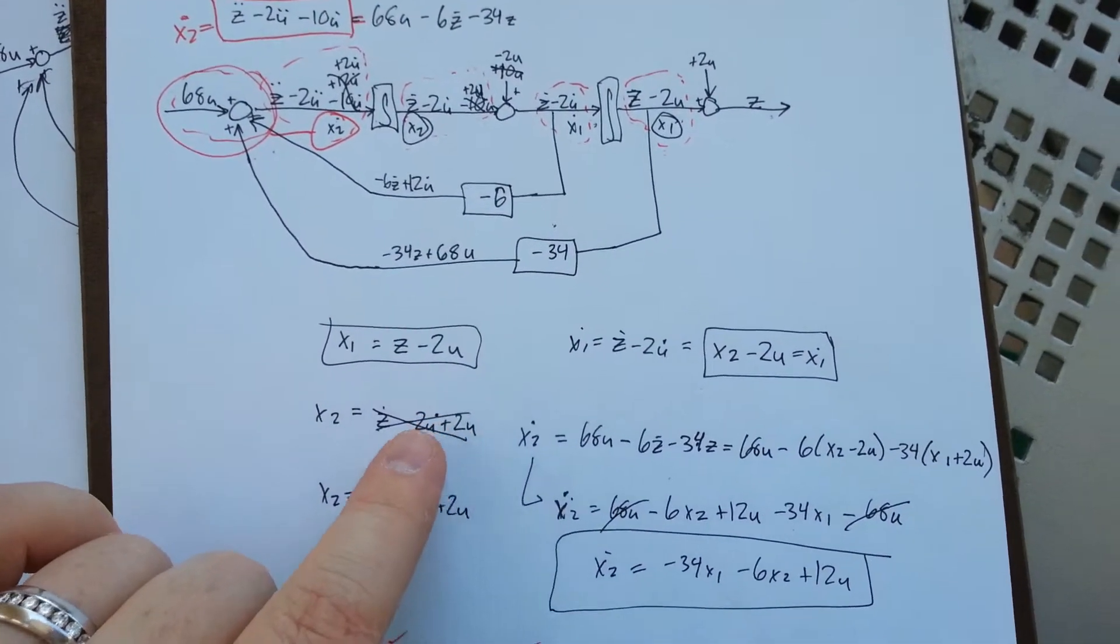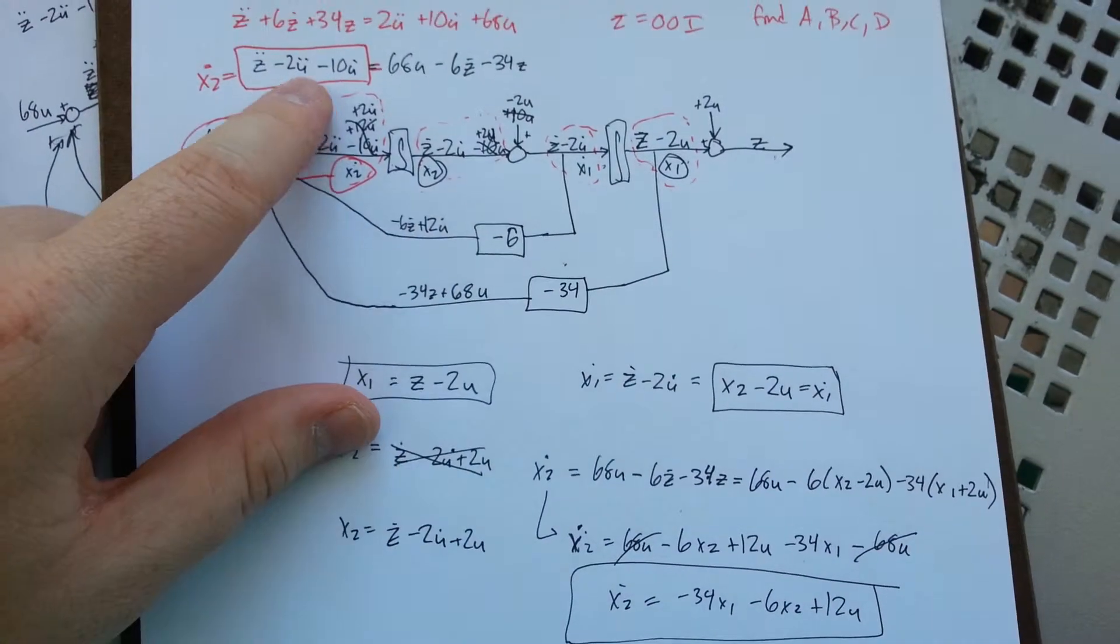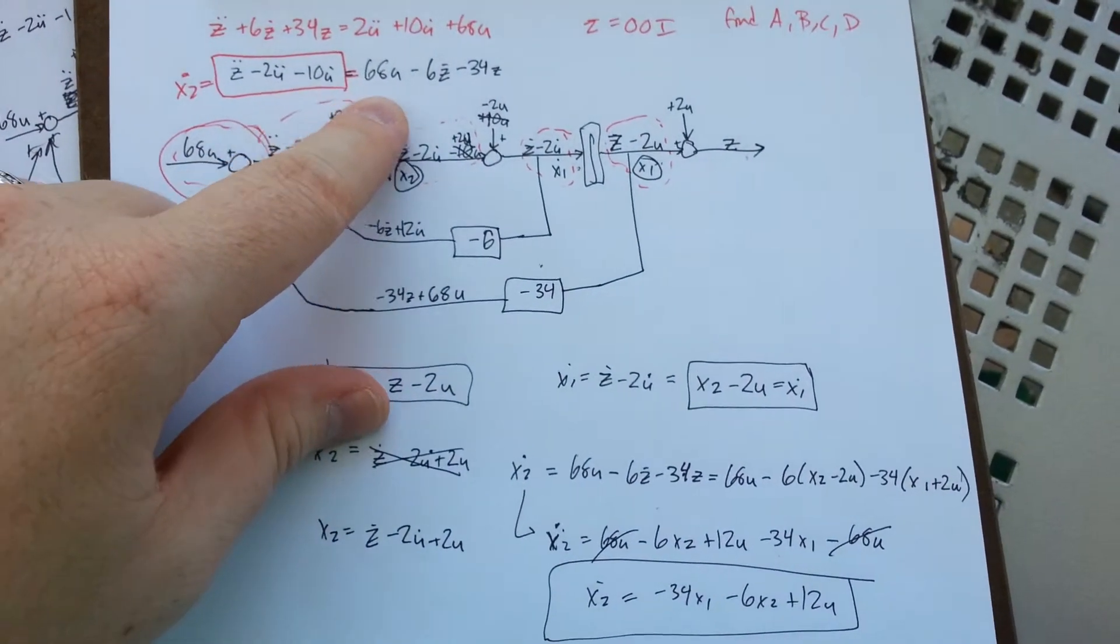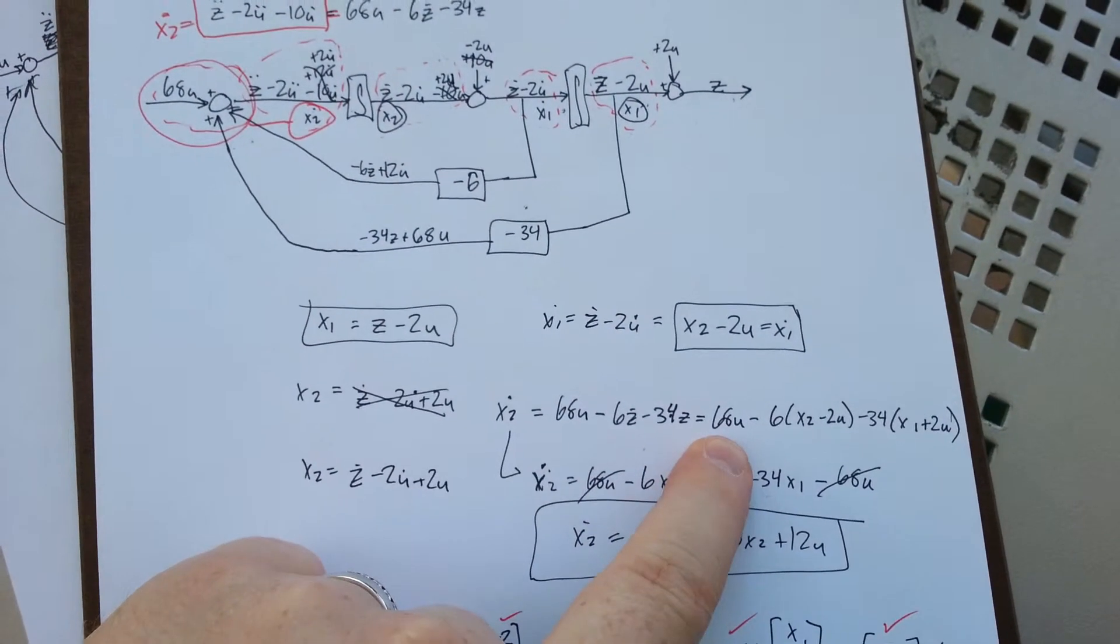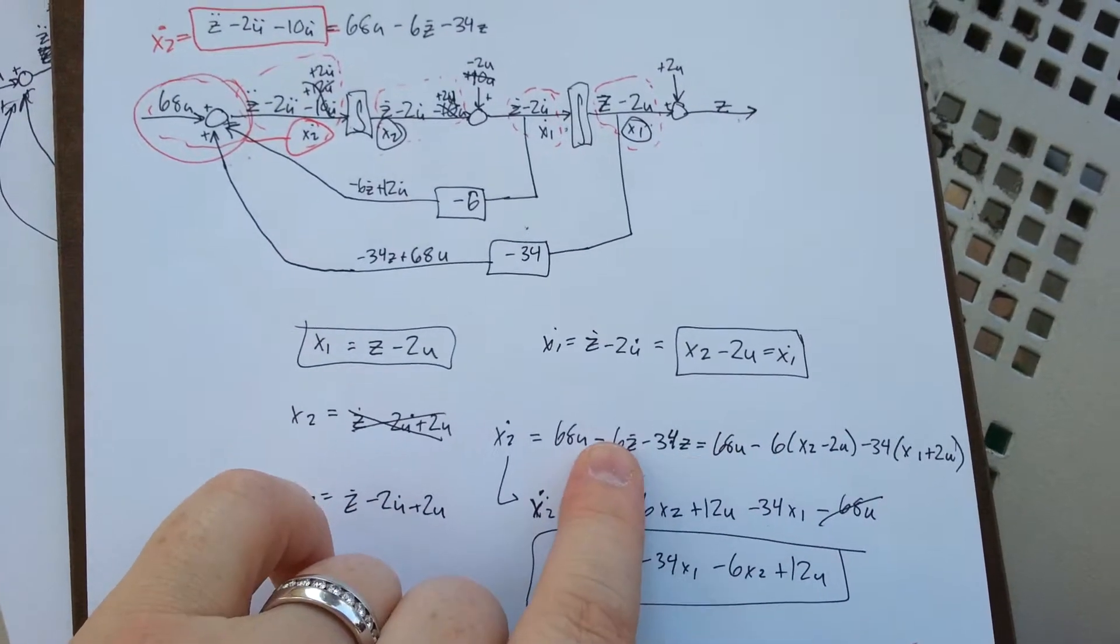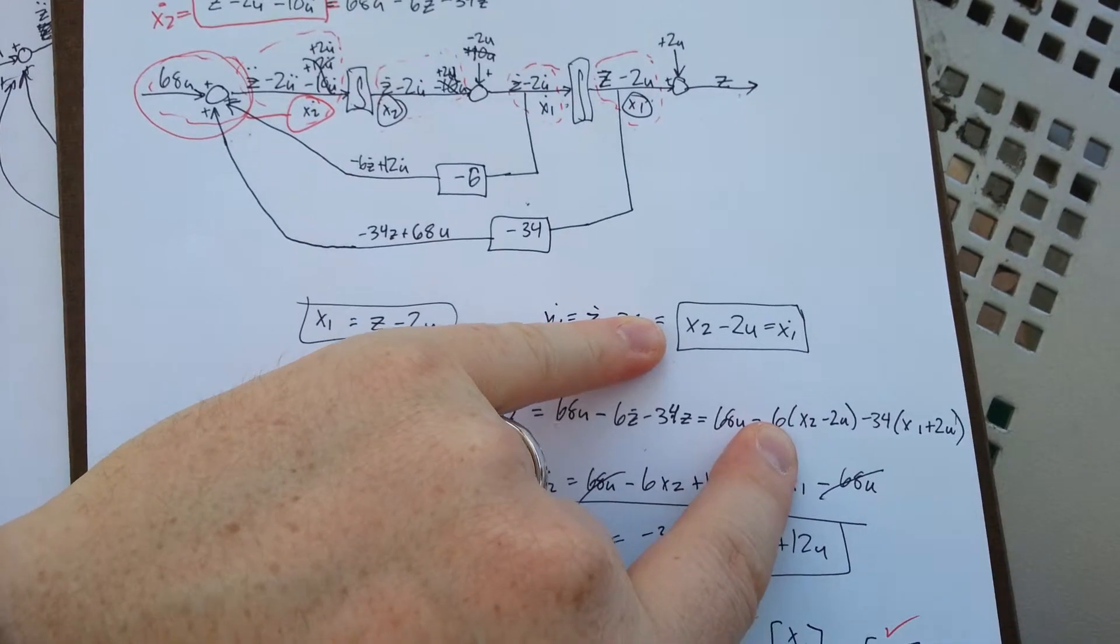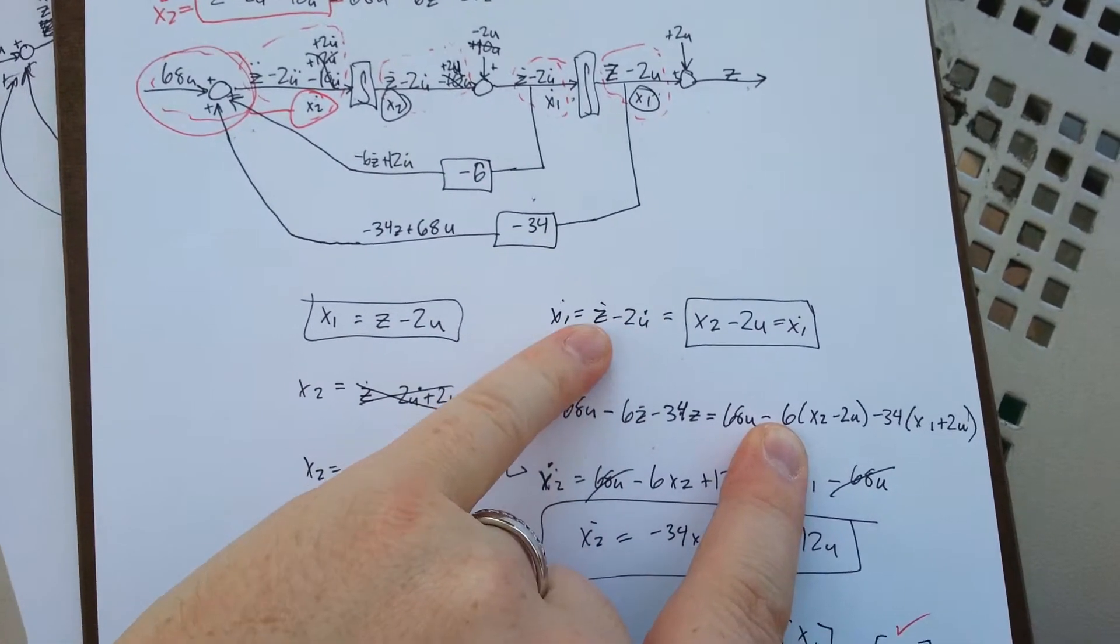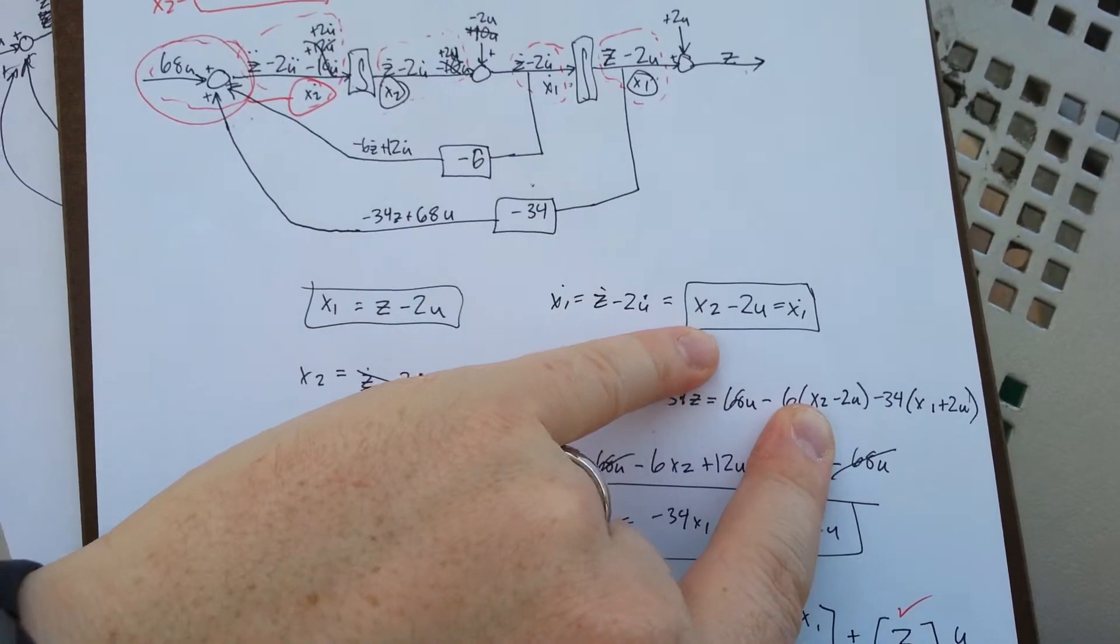I can also say for my x2 dot, I need it to be equal to the entry formula right there, which is in terms of the non-derivative input. I have the plus 68u as shown here. I need the 6z dot, but I'm going to put that in terms of my x2, because to get a z dot I just need that x1 dot in terms of x2.